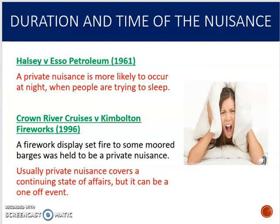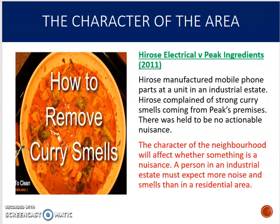The second factor on unreasonable use is the duration and time of the nuisance. Pulsey v Esso confirms the common-sense point that you're more likely to have a nuisance if it's occurring at night-time when more people are trying to sleep. Crown River Cruises tells us that usually a private nuisance will be a continuing state of affairs — something happening regularly over a long time — but it can be a one-off event. In Crown River Cruises, a one-off firework display was held to be a nuisance, though it's more likely if it's going on every night for weeks.